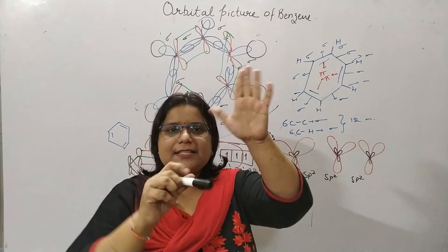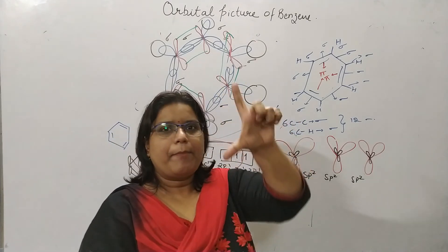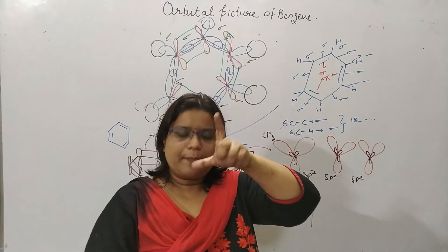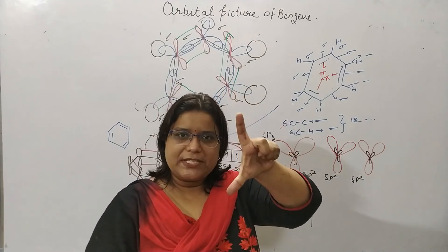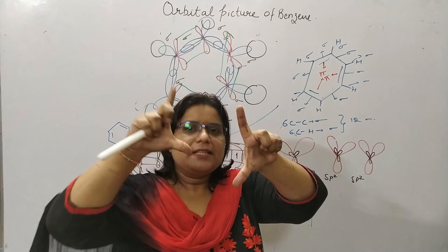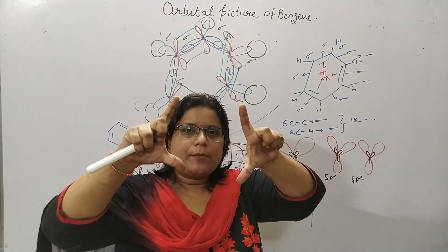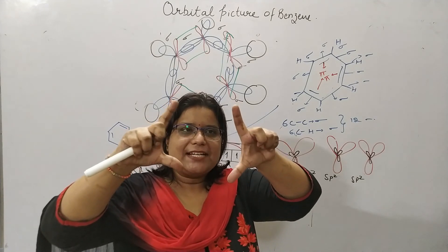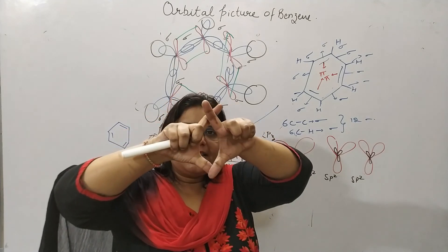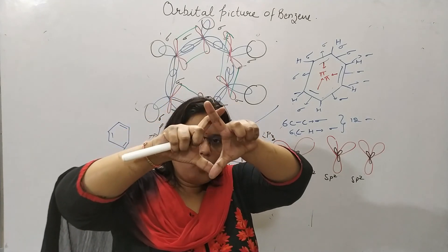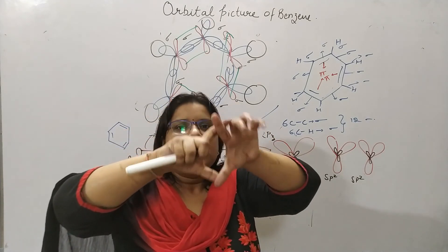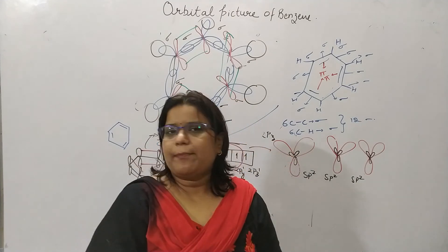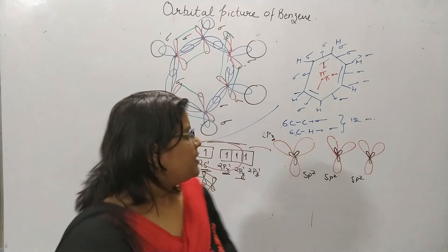By lateral overlapping, the pi bond is formed. Suppose this is the 2pz orbital, and this is the 2pz orbital of the adjacent carbon — they overlap and form the pi bond.